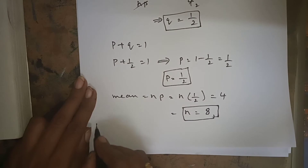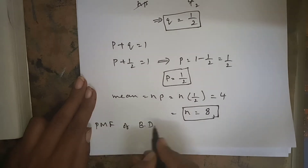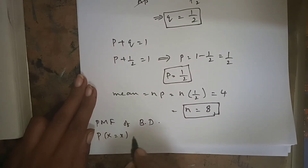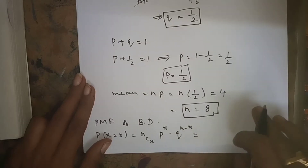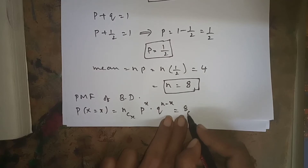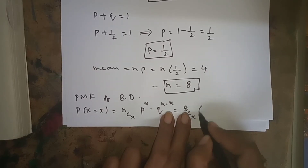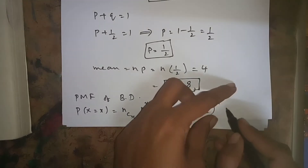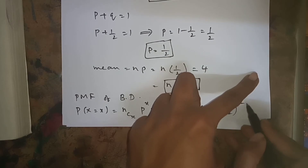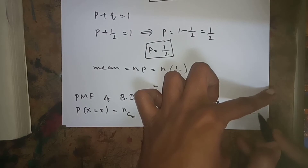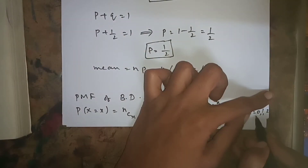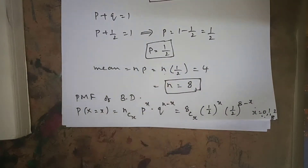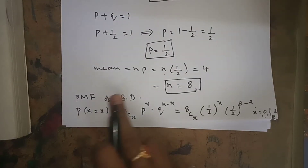Now we write the PMF of binomial distribution: p(x) = nCx * p^x * q^(n-x) = 8Cx * (1/2)^x * (1/2)^(8-x), where x = 0, 1, 2, 3, ..., 8, since n = 8.